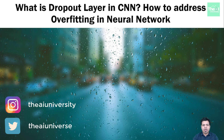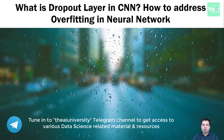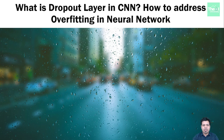In machine learning, regularization is the way to prevent overfitting by adding a penalty like L1 and L2 to the loss function. In deep learning, we will see how to make use of dropout to avoid our neural network model getting overfitted — in other words, how to make a CNN model more generalized. We will also learn whether the dropout layer should be placed before or after the activation function. So we will be talking about regularization in a neural network.